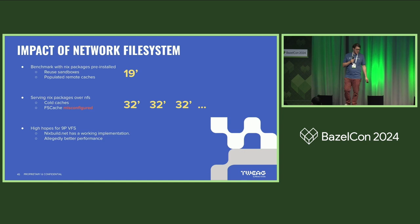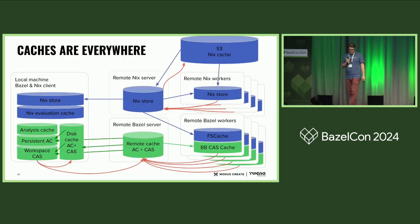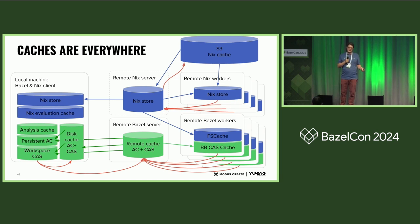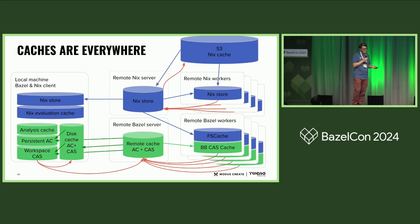We also have discussions with nixbuild.net — they are working on a 9P VFS implementation that's supposed to be faster than NFS anyway. We also have a cache for Git LFS objects and many more layers. These days, making proper measurements is very difficult. There are so many caches — enabling one, disabling another — that the results are tricky. The ones I presented are the ones I'm sure about because they are stable and I understand how they work.